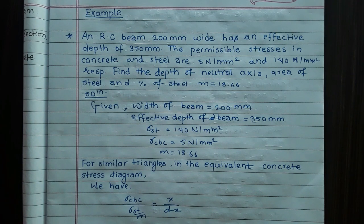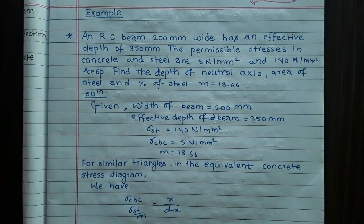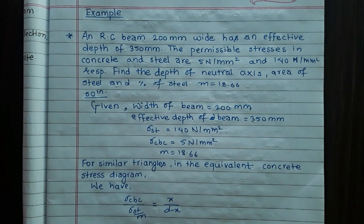An RC beam 200 mm wide has an effective depth of 350 mm. The permissible stresses in concrete and steel are 5 N/mm² and 140 N/mm² respectively. Find the depth of neutral axis, area of steel and percentage of steel. Given M equals to 18.66 molar ratio.